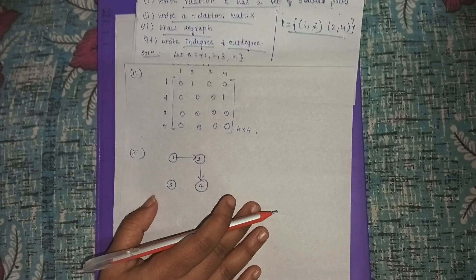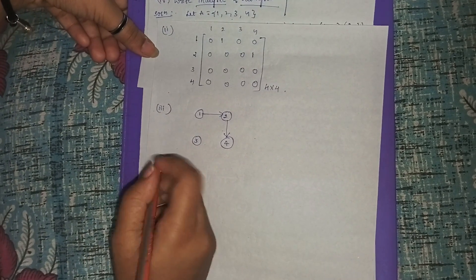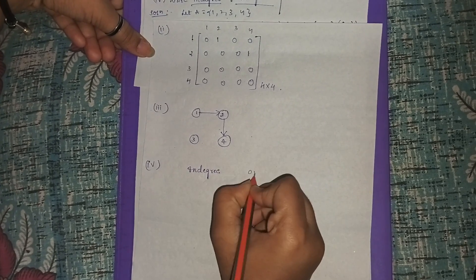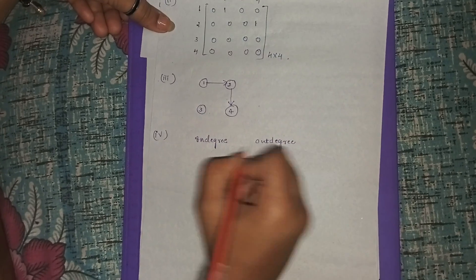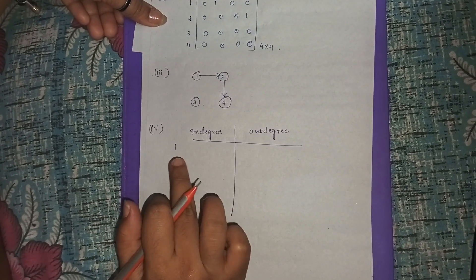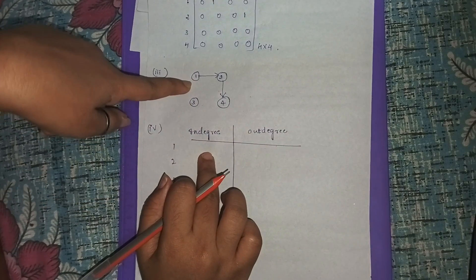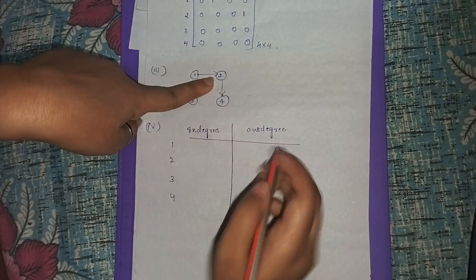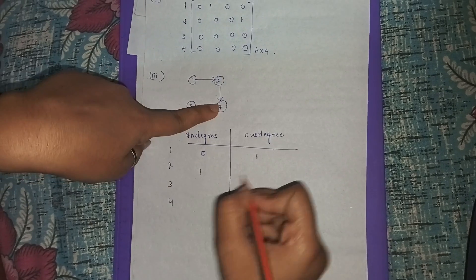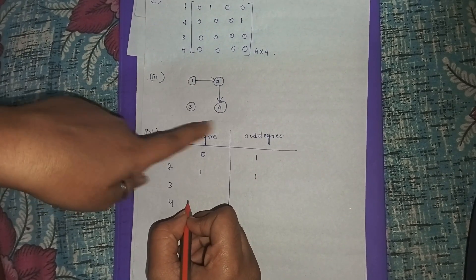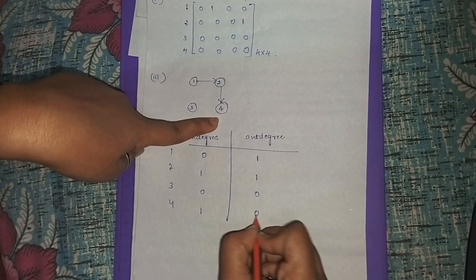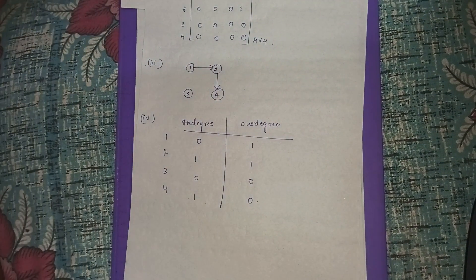Next, draw the digraph (third question): there are four elements — draw circles and label them. From the relation, draw arrow from 1 to 2 and from 2 to 4. For in-degree and out-degree: in-degree means incoming edges, out-degree means outgoing edges. For vertex 1: in-degree = 0, out-degree = 1. For vertex 2: in-degree = 1, out-degree = 1. For vertex 3: in-degree = 0, out-degree = 0. For vertex 4: in-degree = 1, out-degree = 0.